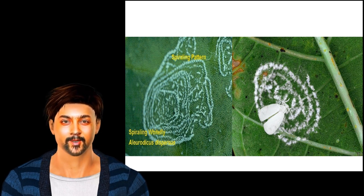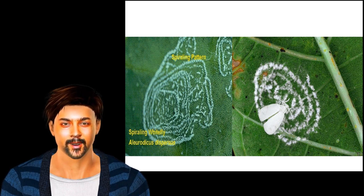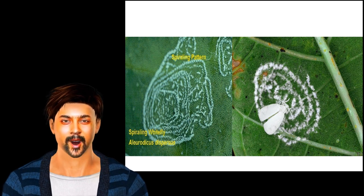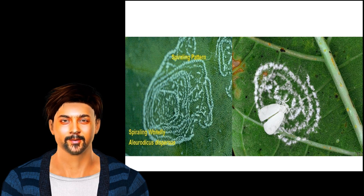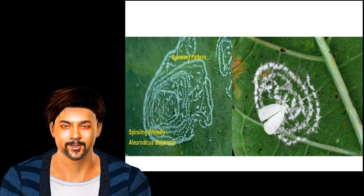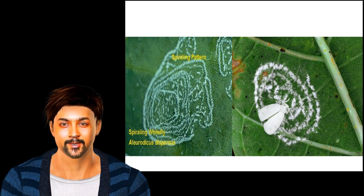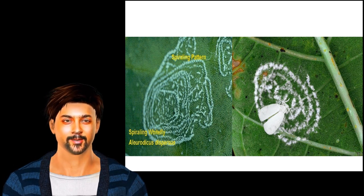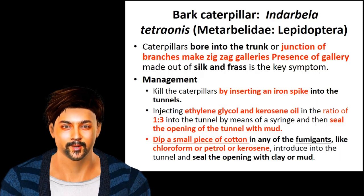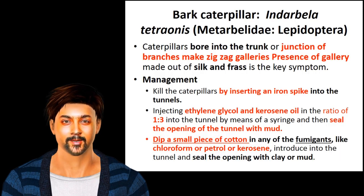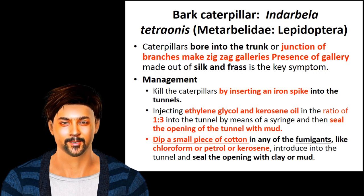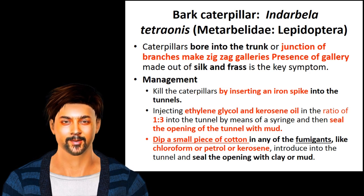Also use predator lights and parasitoids Encarsia, coccinellids, Chilocorus, and Chilomenus. Use neem and neem oil for effective management, and avoid synthetic pyrethroids and other harmful chemicals. The next pest is the bark caterpillar, Indarbela tetronis, family Metarbelidae, order Lepidoptera.